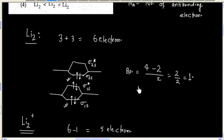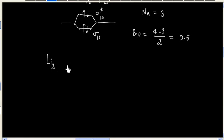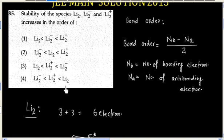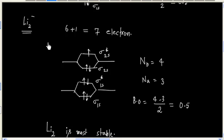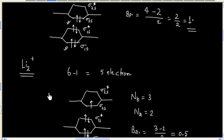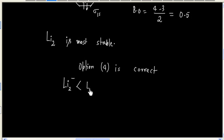Li₂ has the maximum bond order of 1, and bond order is directly related to stability. This means Li₂ is most stable. Looking at the options, option 4 shows Li₂ as most stable, so option 4 is correct. The order is: Li₂⁻ is less stable than Li₂⁺, and Li₂ is most stable.